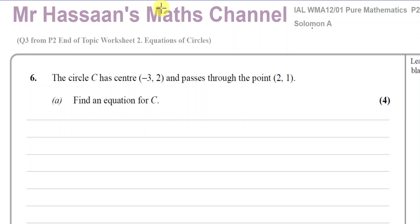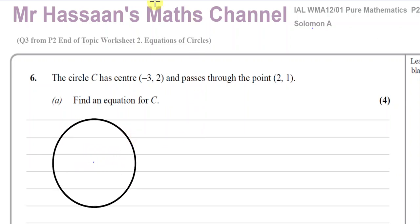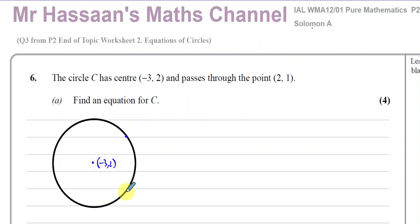For the purposes of making it clear, I'm going to draw a circle with this center. There's the center of the circle, which is minus 3, 2. And it passes through the point 2, 1.